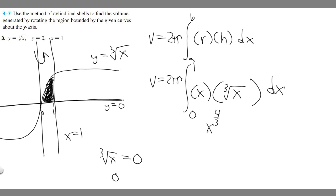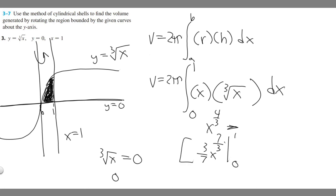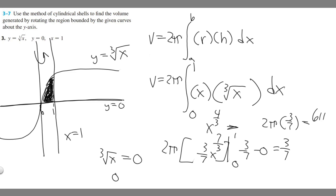Now we just take the integral of x to the four-thirds. We add one to the exponent, giving x to the seven-thirds, then divide by seven-thirds — which becomes three-sevenths times x to the seven-thirds. We evaluate from zero to one. Plugging in one gives three-sevenths; plugging in zero gives zero. So the result is three-sevenths. Don't forget to multiply by two pi: two pi times three-sevenths gives six pi over seven. So the volume is equal to six pi over seven.